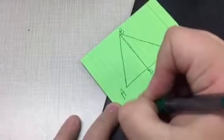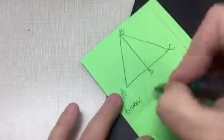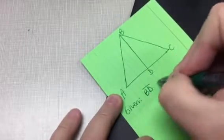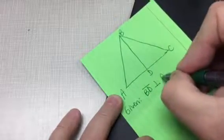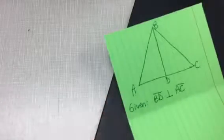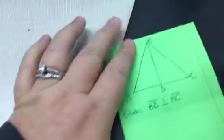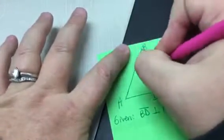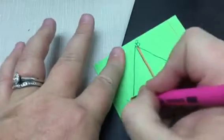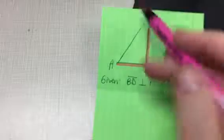So on this particular problem, we are going to be given that segment BD is perpendicular to segment AC. So again, if you need to, I'm going to take a little highlighter here. Here's segment BD, here's segment AC. Notice that they make that T. They are perpendicular.